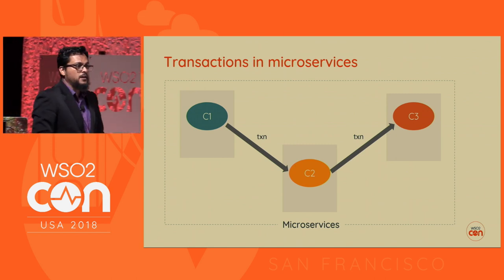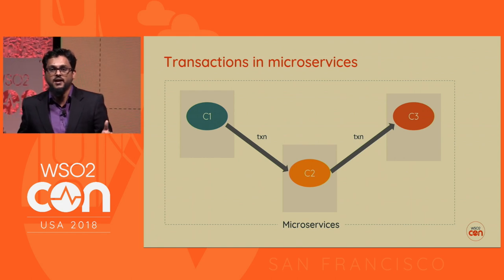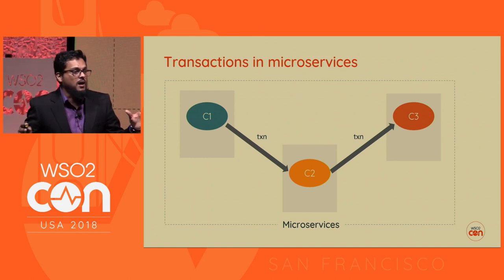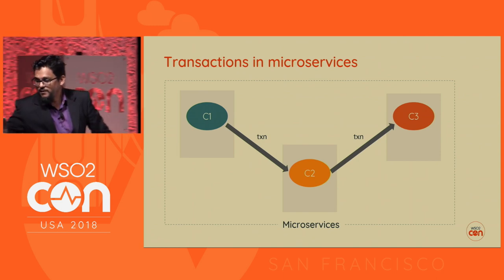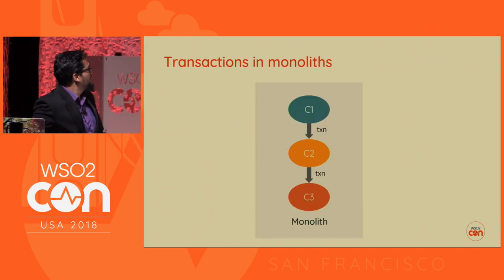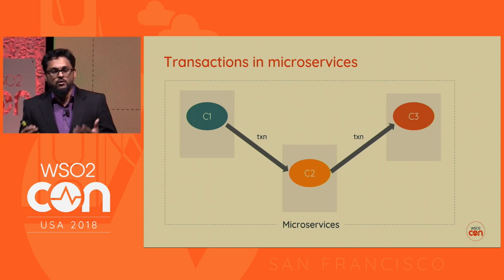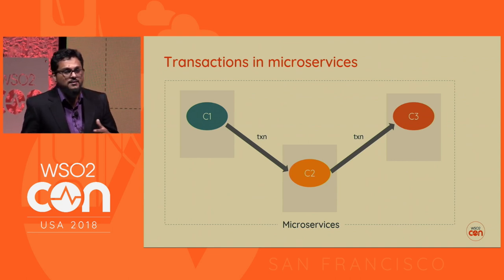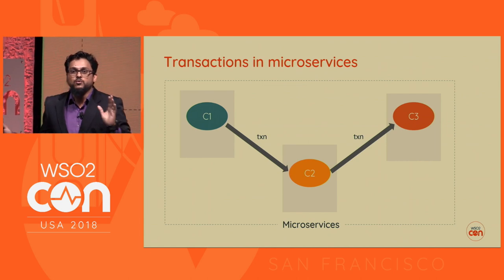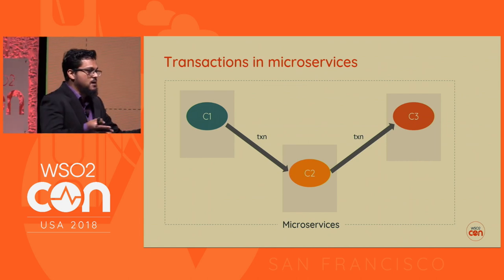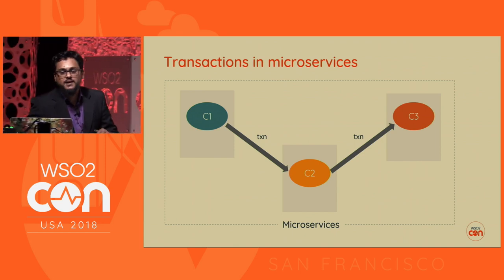Now we break it up into microservices, so we have three different processes with components running in three different runtimes. The business execution is still the same, but rather than everything being in one process, now we have it in three different processes. We need to find a way to propagate the transaction context throughout these services — to transfer the transaction context over the network to these processes. That's what this specification addresses.